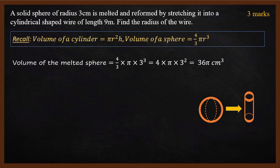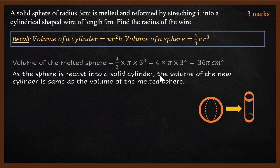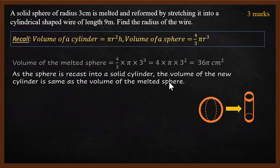We got the volume of the melted sphere. Now we need to find the radius of the wire. As the sphere is recast into a solid cylinder, the volume of the new cylinder is the same as the volume of the melted sphere. They are the same because you don't lose volume when you melt and recast. So if the volumes are the same, then we can apply the formula.